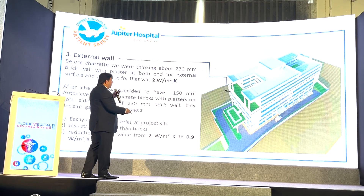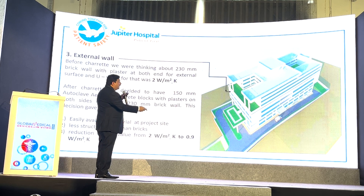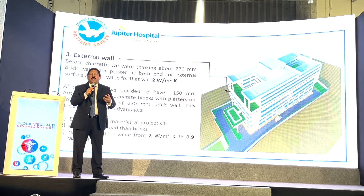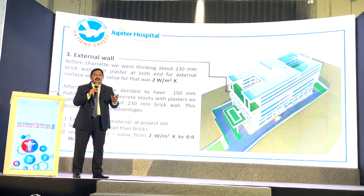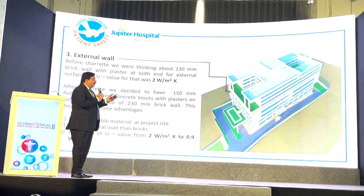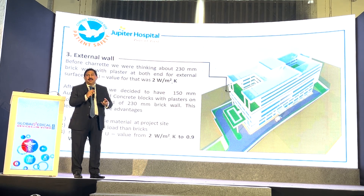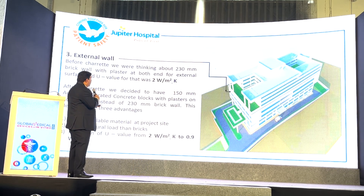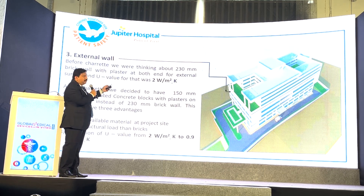There is one more thing — this is the external side of the building. When we say external side of building, normally we tend to use RCC. But if you use AAC blocks — hollow blocks we cannot use because of water flipping issues — if you use AAC blocks, a huge impact is going to come on energy reduction. So instead of 230 mm brick wall, we have used 150 mm AAC block and it has made an impact.